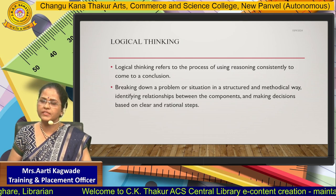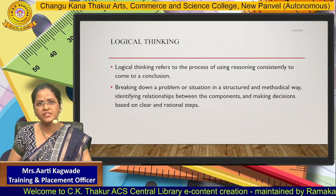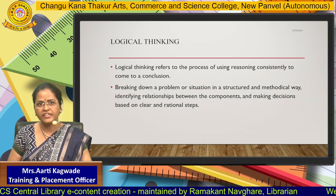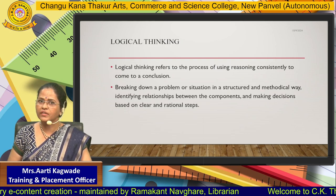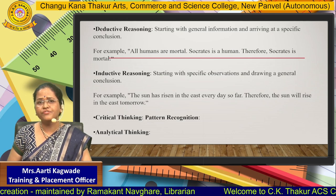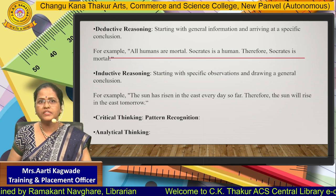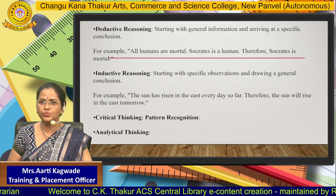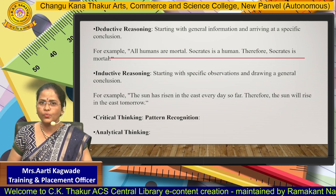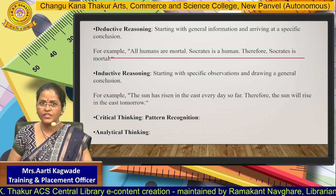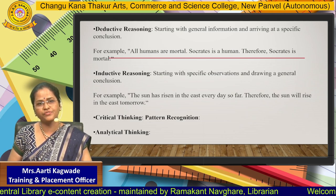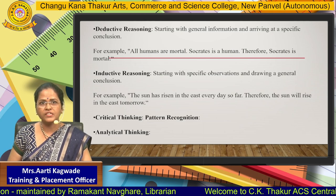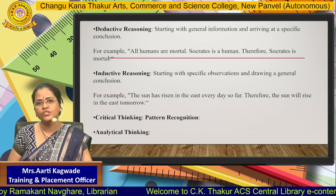The next section is logical thinking. It refers to the process of using reasoning consistently to come to a conclusion. You have to break down a problem or a situation in a structured and methodological way, identify the relationships between the components, and come to a logical conclusion. There are different reasoning patterns. For example, deductive reasoning: if the statement given is 'all humans are mortal' and 'Socrates is a human,' the logical deduction is 'Socrates is mortal.' There are various ways of judging your reasoning, like inductive reasoning and critical thinking. You would also be given a pattern and asked to find the next sequence.